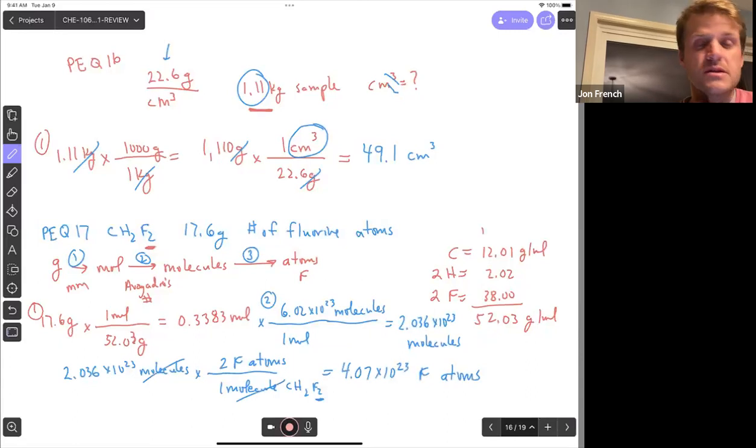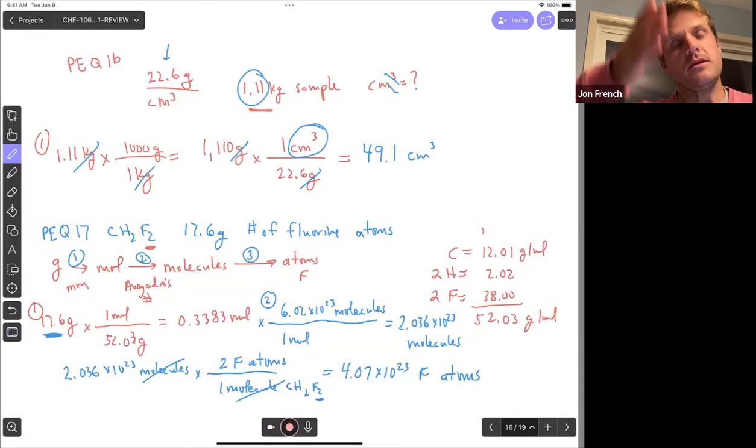Molecules cancel. And I'm going to get like 4.07 times 10 to the 23 fluorine atoms. I would go three significant figures because the mass is three significant figures. 17.6 grams is three significant figures. Don't plug this number in to your homework and tell me it's wrong or your practice exam and tell me it's wrong. It's a variable. So your initial mass might be a little bit different. The steps would be the same. Mass to moles using the molar mass, moles to molecules using Avogadro's number. And then we're going to use the formula that tells us the molecular formula tells us there's two fluorines for each molecule.